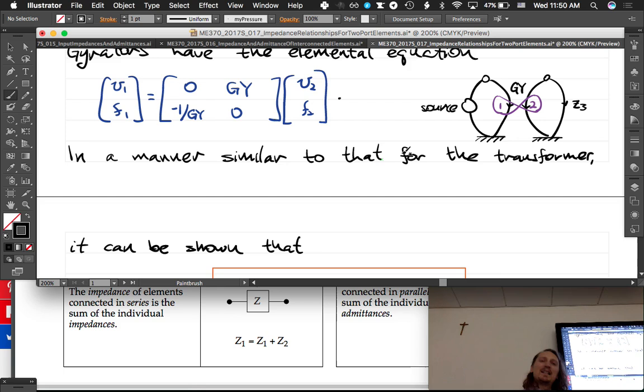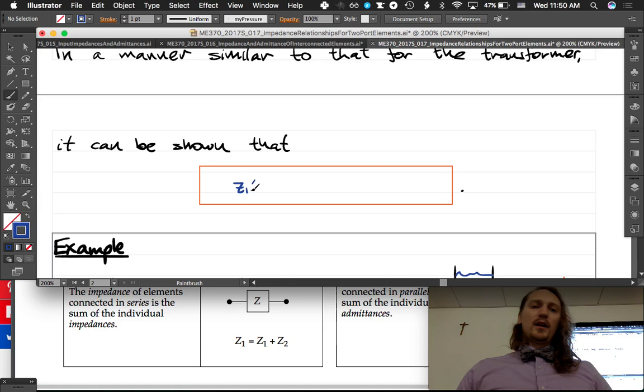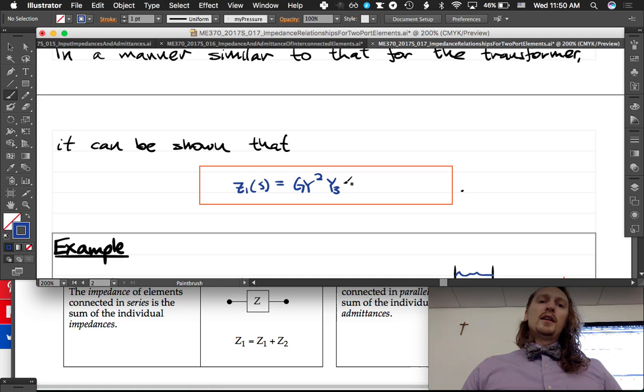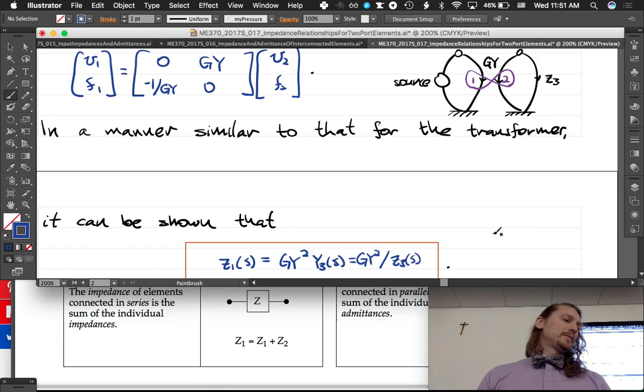In a manner similar to that for the transformer, it can be shown—and I know you guys are going to be shocked by this result, shocked I tell you—that z1 of s is equal to gy squared times y3 of s, so the admittance of three, so the reciprocal of z3. So we could write it as gy squared divided by z3 of s.